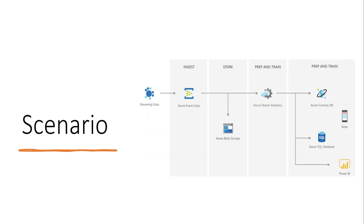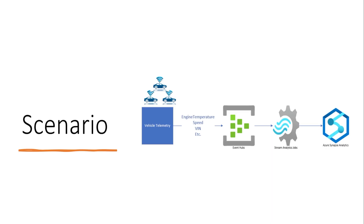We can also store data into Cosmos DB, SQL DB, or ADLS Gen1/Gen2 storages. Another example architecture shows streaming data ingested into Event Hub, stored in Blob Storage, with real-time analytics processing. A vehicle telemetry example shows many vehicles sending data such as engine temperature, speed, and wind readings. Event Hub is used for ingestion, and Stream Analytics jobs process this data to notify if the engine temperature is too hot or if a driver is speeding.